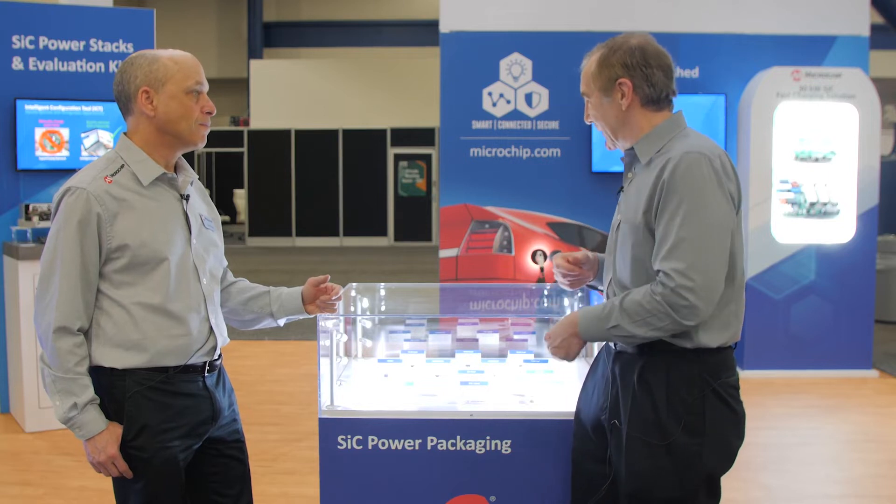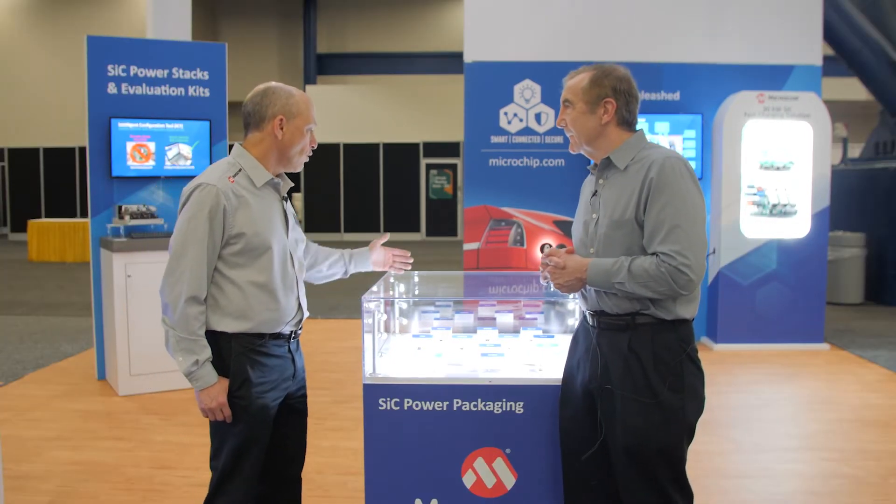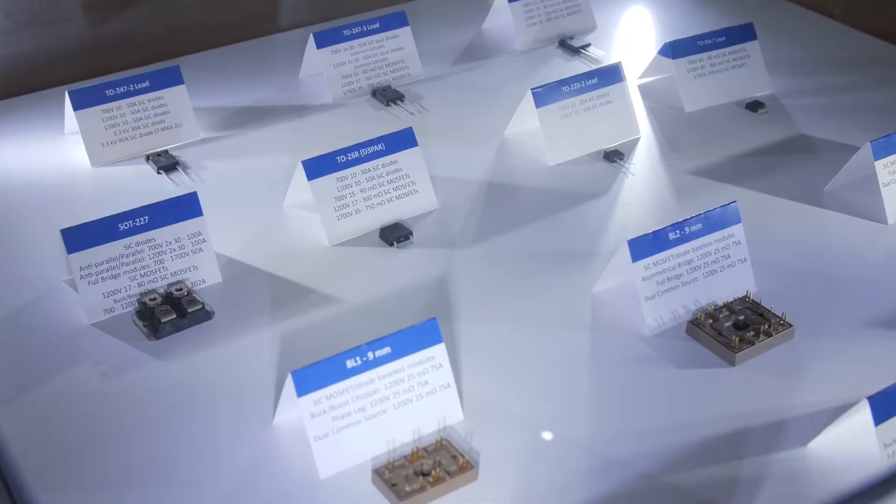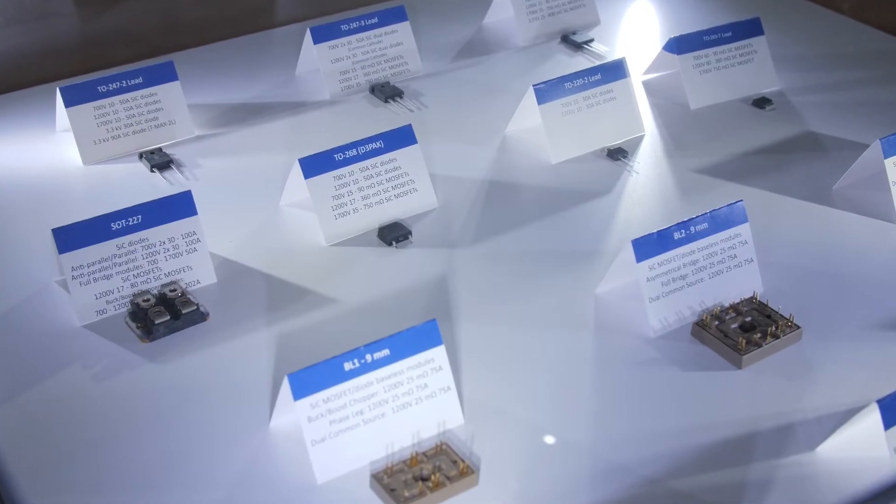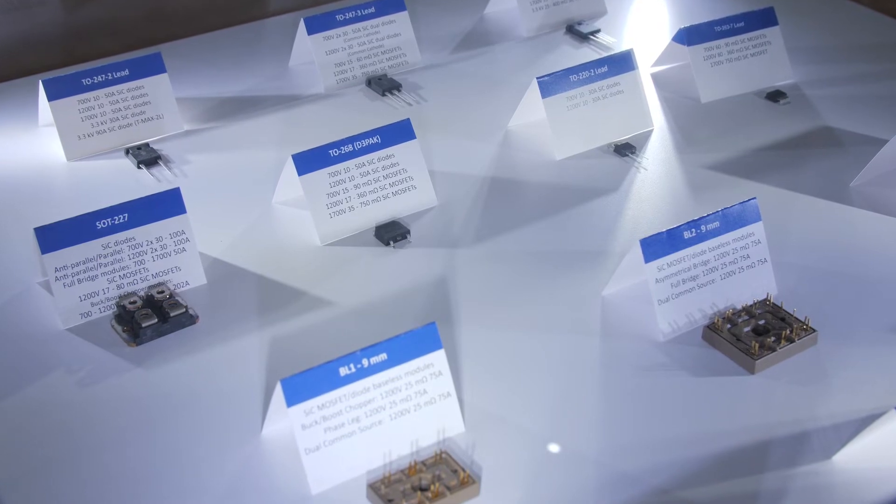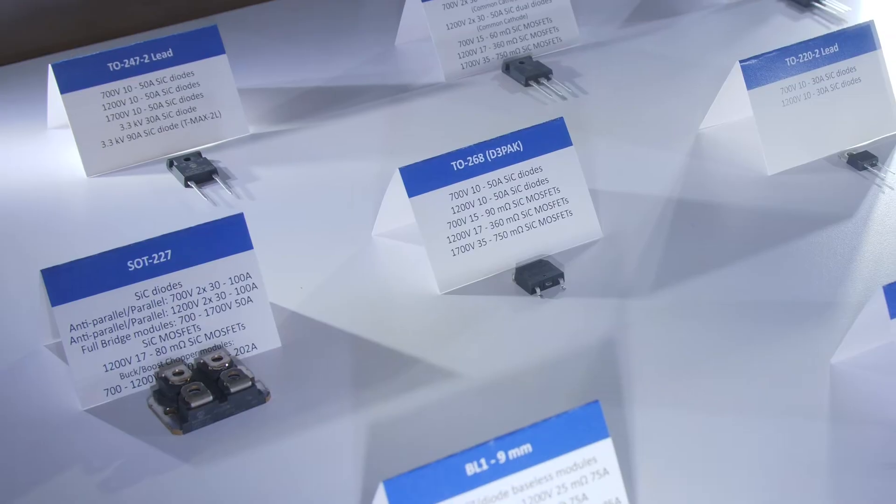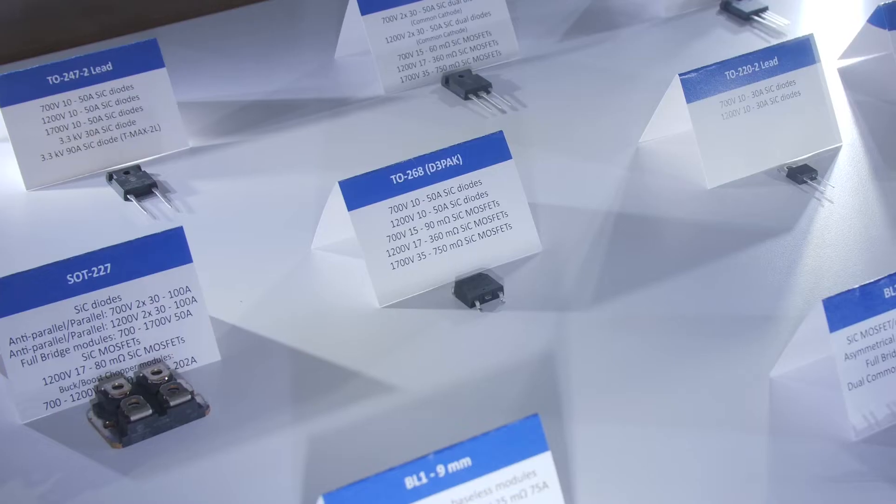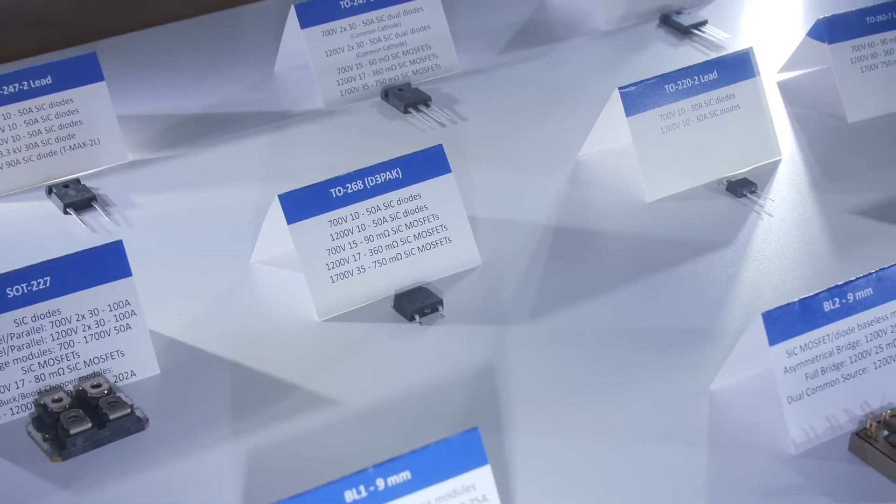Can you give us some details on some of these? Absolutely. So as you look through the display, the top row shows our discrete devices, and that's where we've got that broad range. Very low RDS on for our MOSFETs at 25 milliohm for 3.3 kV, even lower for some of the other voltage classes.